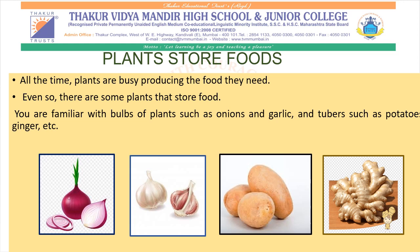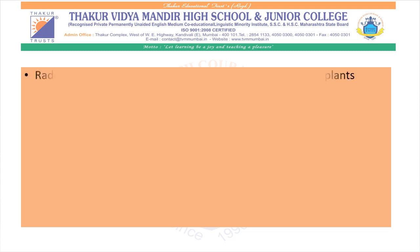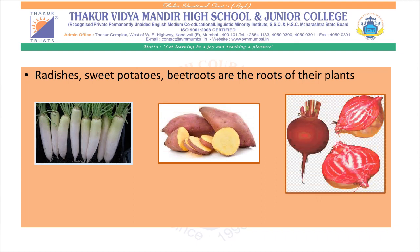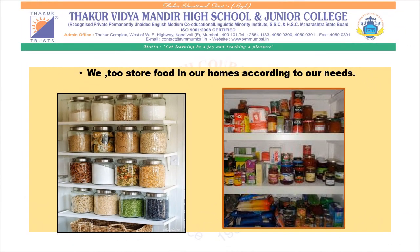For example, plants store food in bulbs such as onion and garlic. They store food in stem or tubers such as potatoes, ginger, etc. Plants also store food in roots such as radish, sweet potato, and beetroot. So these plants store food in their stem or roots. As food is our basic need, we store food at home so it is available to us whenever we need it.